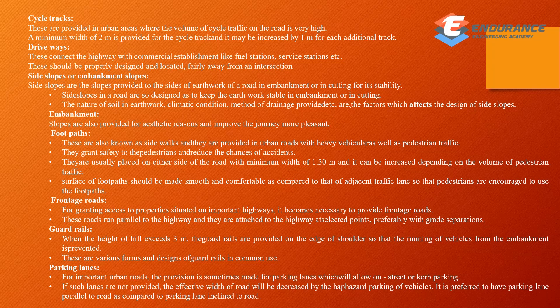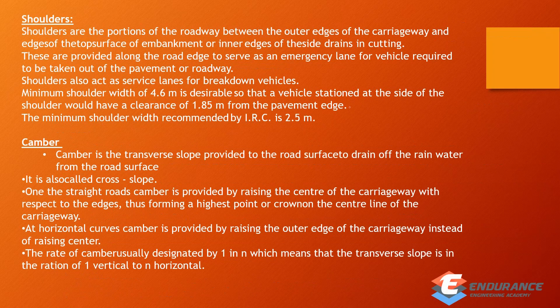The next path is the frontage road, used for important highways. This is a side road that allows access without crossing the highway. The next path is parking lanes. On the next path you can use parking lanes if there are too many buses on this route. And then next is the shoulder. Shoulder is a carriage wheel on each side with minimum 4.6m. The minimum shoulder width IRC recommends is 2.5m.